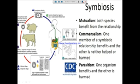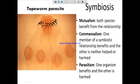The third symbiotic relationship is parasitism, where one organism benefits and the other is harmed. A parasite is an organism that finds a host, attaches to that host, and feeds on it. For example, tapeworms like to live in the intestine of humans. The tapeworm uses hook-like structures to fix itself tightly to the host's intestine wall.